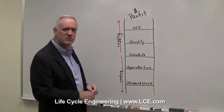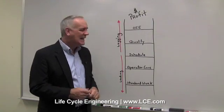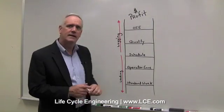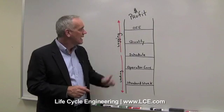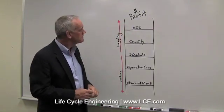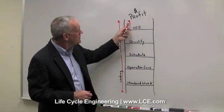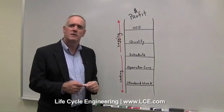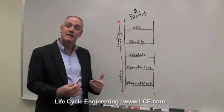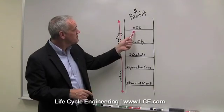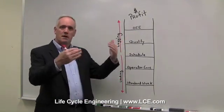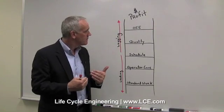Here I have a metrics ladder, and my ladder consists of leading indicators and lagging indicators, with profit being a very lagging indicator. So what can I do if profit is too much of a lagging indicator? I'll find something more leading than profit. Many organizations choose OEE. OEE is much more leading than profit.